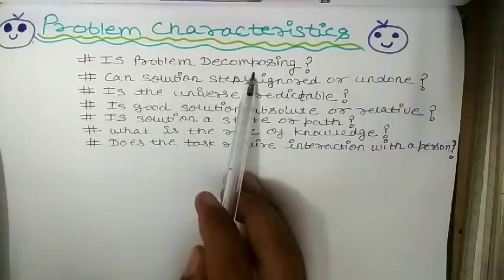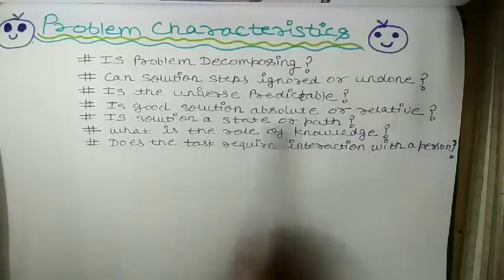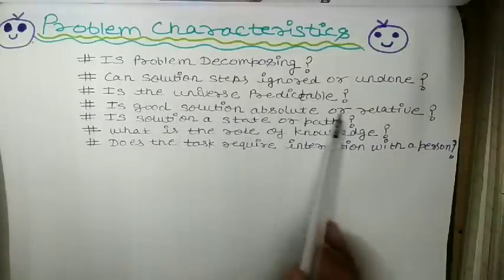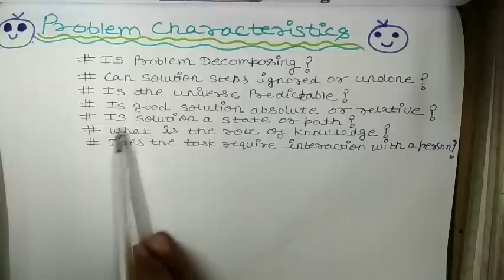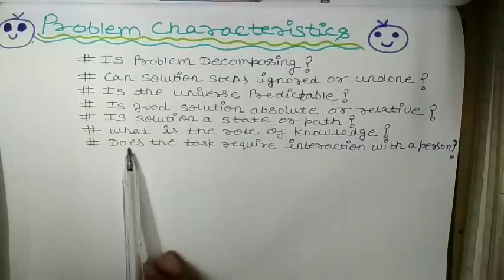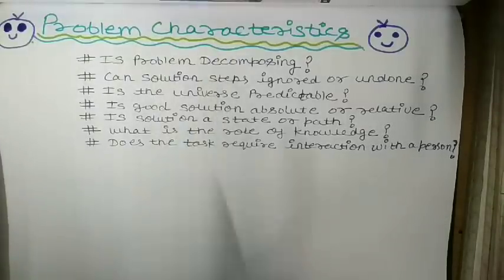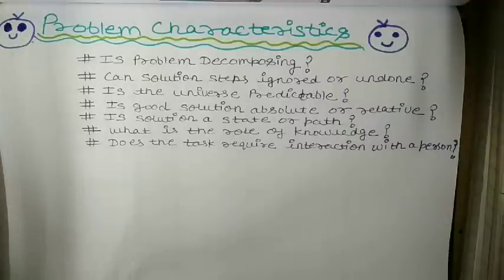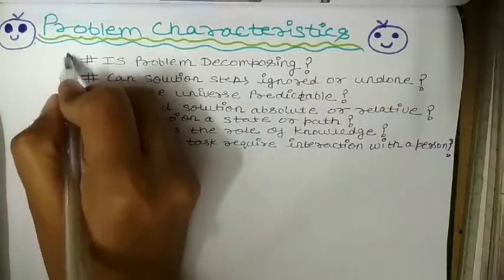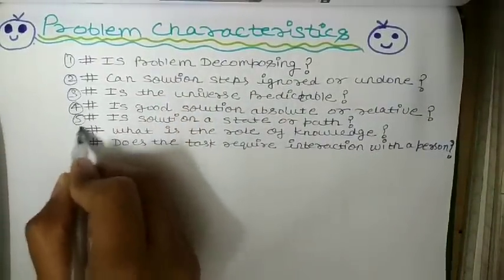The first one is: is problem decomposable? The second one is: can solution steps be ignored or undone? The third is: is the universe predictable? The fourth: is good solution absolute or relative? The fifth: is solution a state or path? The sixth: what is the role of knowledge? And the seventh: does the task require interaction with a person?